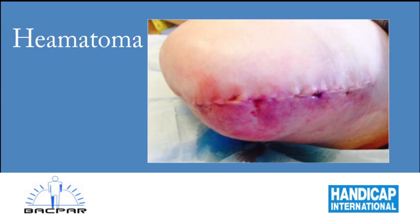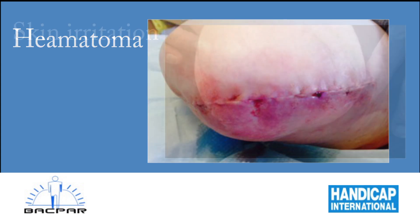A haematoma in a stump is a collection of blood outside the blood vessels that can occur post-surgery if not drained properly. It can be observed as a dark bruising area on the skin and may bleed excessively. It needs to be removed for a wound to heal.